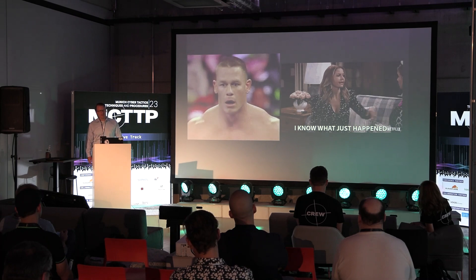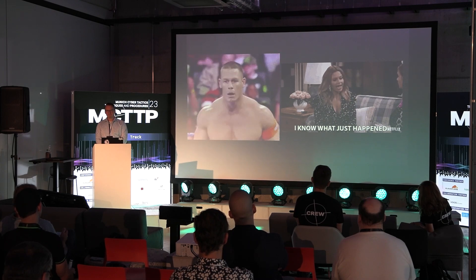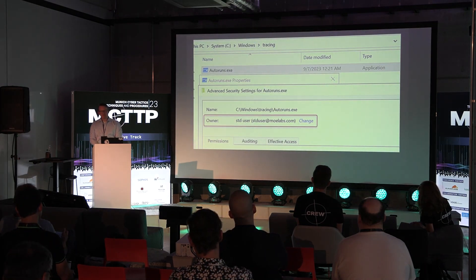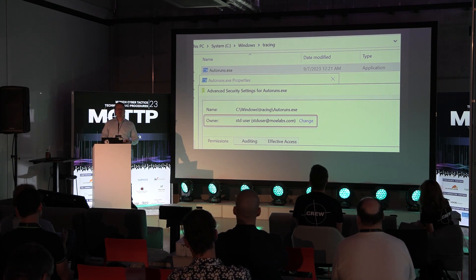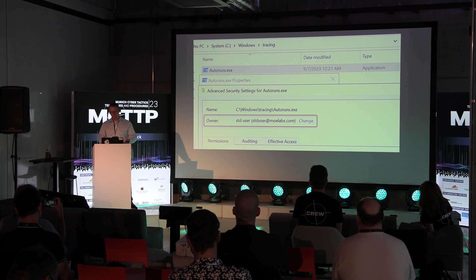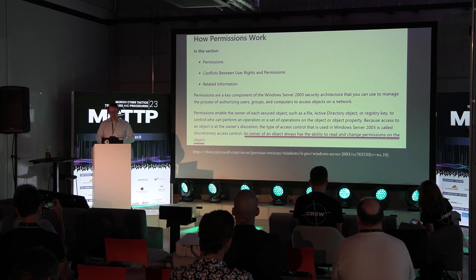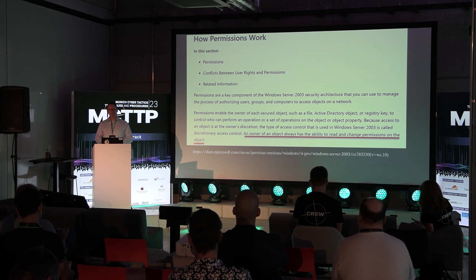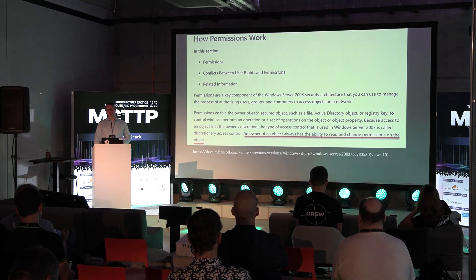Why could we change the ACLs? In Windows, we have the concept of an owner. Every time you create something in Windows, somebody becomes the owner. When I created the file as my user account, I became the owner of that file. Per the technical documentation, an owner of an object always has the ability to read and change permissions on the object - meaning I can assign ACLs however I want because it's my file.